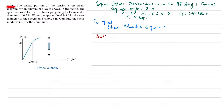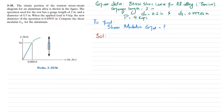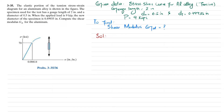Welcome back. Problem 3.35 — the elastic portion of the tension stress-strain diagram for aluminum alloy is shown. The specimen used for the test has a gauge length of 2 inches and a diameter of 0.5 inch. When the applied load is 9 kips, the new diameter of the specimen is 0.49935 inch. Compute the shear modulus of aluminum alloy.